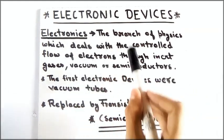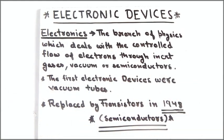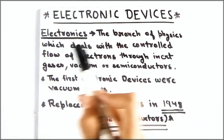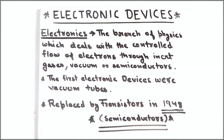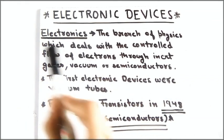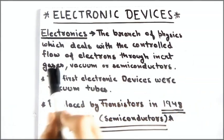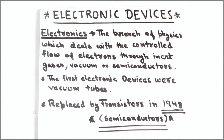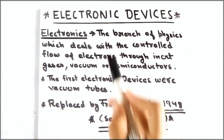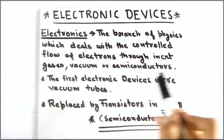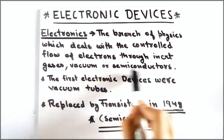We can use those electrons as zeros and ones to make the computer work. To use those electrons we have to flow them controllably — we have to control their flow. We control their flow through inert gases, vacuum, or semiconductors, and these days we use semiconductors the most.